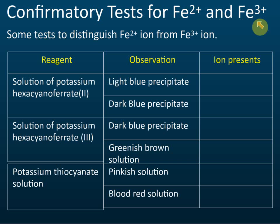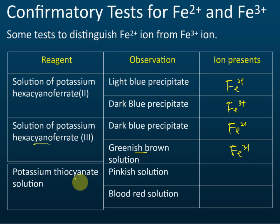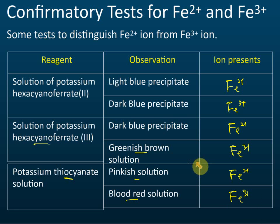Confirmation tests for iron 2 and iron 3 ions: use potassium hexacyanoferrate(II) — light blue precipitate indicates iron 2 ion; dark blue indicates iron 3 ion. Use potassium hexacyanoferrate(III) — dark blue indicates iron 2 ion; greenish brown solution indicates iron 3 ion. Use potassium thiocyanate — pinkish solution indicates iron 2 ion; blood red solution indicates iron 3 ion. This is a revision from Form 4 salts topic.